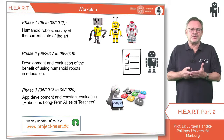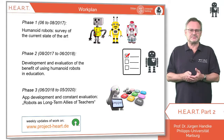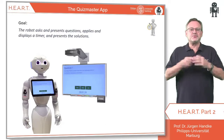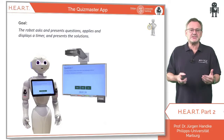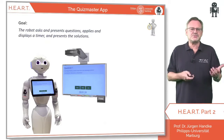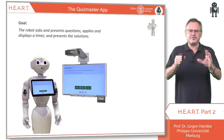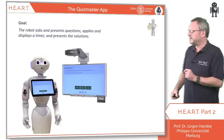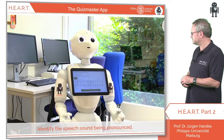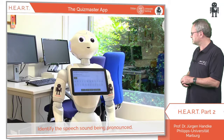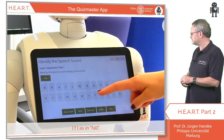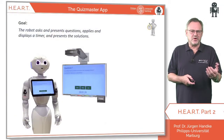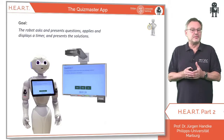By doing this, we can make humanoid robots our true long-term allies. The first app turns our robot into a quiz master who asks and presents questions, applies and displays a timer, and after a predefined time presents the solution. Here is a demo of that app.